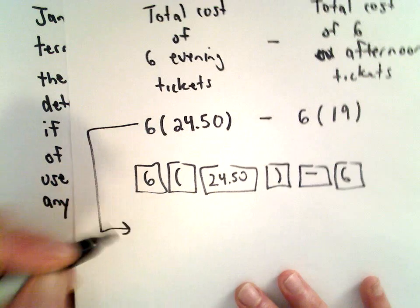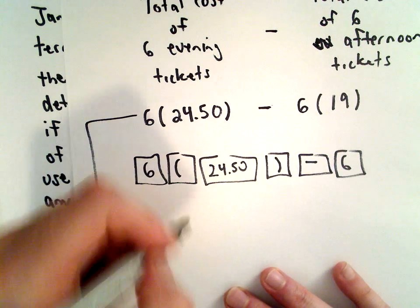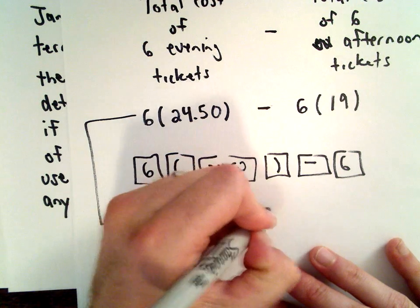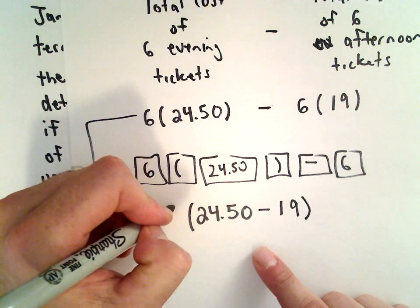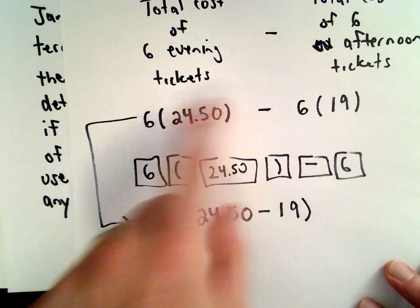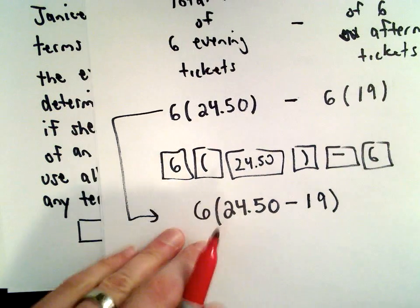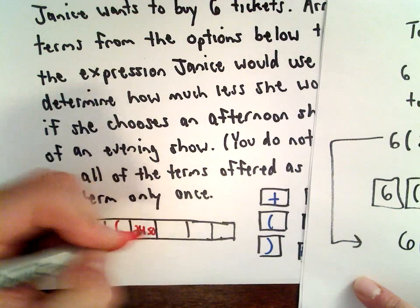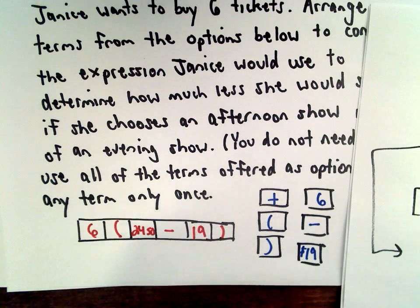The idea is we can actually just factor out the six, since it's involved in both expressions. Equivalently, if she only bought one ticket, the price difference would be $24.50 minus $19 — that's how much she would be saving per ticket — and then we would multiply that by six. So the answer they're looking for is: six, left parenthesis, $24.50 minus $19, right parenthesis. That would be the answer they're looking for, although the other approach is also 100% valid and correct.